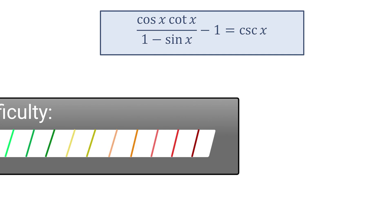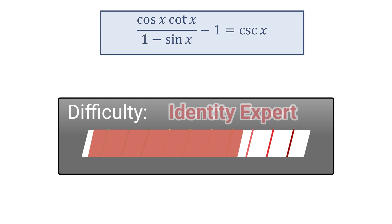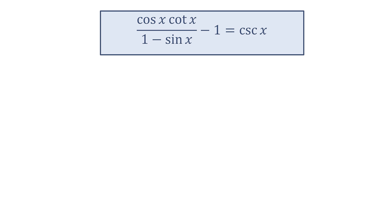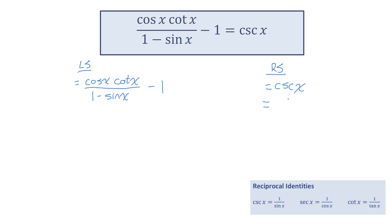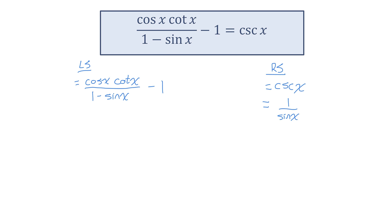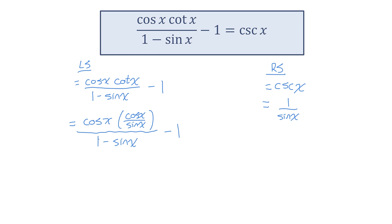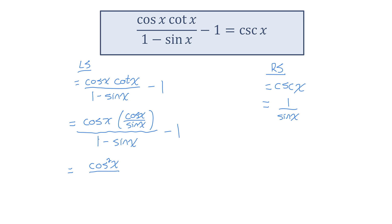Identity number eight. Let me separate into left and right side. The right side is just cosecant x, which is 1 over sine x. On the left side there's quite a bit of work to do. I'll start by replacing cotangent x using the quotient identity: that's equal to cos x over sine x. When I multiply those factors in the numerator, cos times cos is cos squared, giving me cosine squared x over sine x — and that's all being divided by 1 minus sine x.